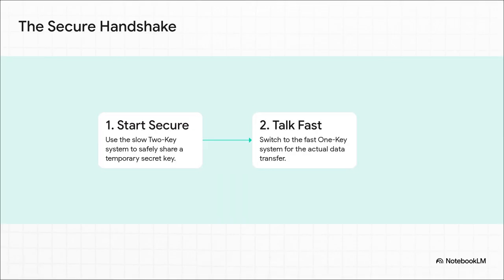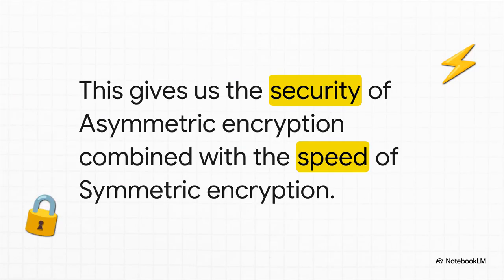Here's how that secure handshake works. When your browser connects to a secure website, you first use the slow but super secure two-key system — and what are you doing? You're not sending your real data yet. You're just using it to safely exchange a brand new, one-time-use secret key. Then, once that key is securely in place, both sides switch over to the super fast one-key system to exchange the actual data. The result? You get the fortress-like security of the two-key system for that crucial initial handshake, combined with the lightning-fast speed of the one-key system for the actual conversation. It's elegant, it's efficient, and it is the backbone of all modern secure communication.